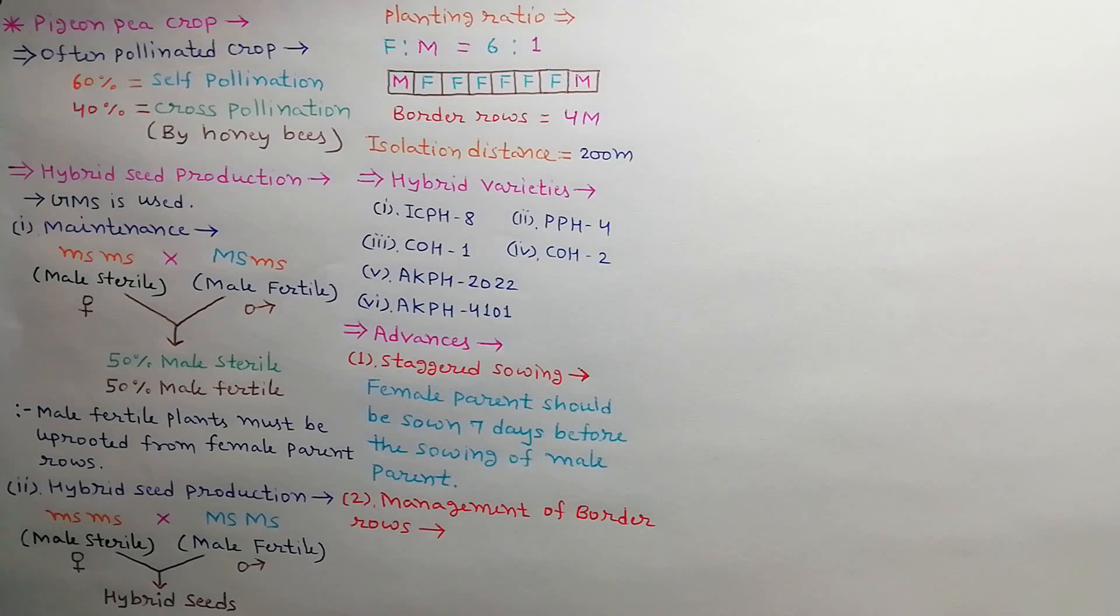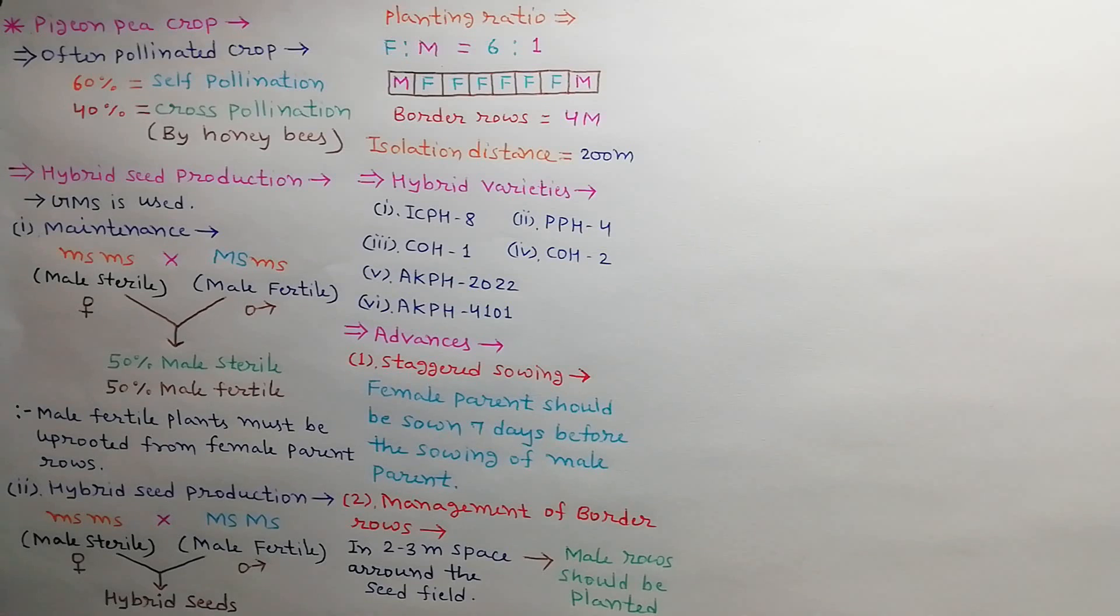Second is management of border rows. Around the hybrid seed field, male parent rows are planted in 2-3m area to enhance the availability of pollens.